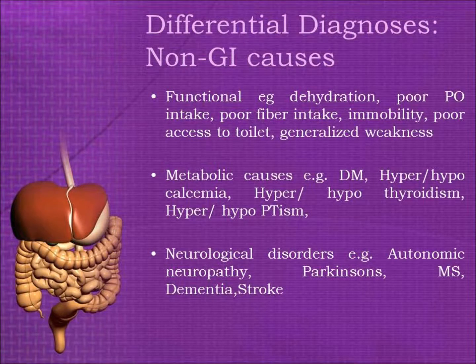Differential diagnoses, non-GI causes. Functional causes include, for example, dehydration, poor peroral intake, poor fiber intake, immobility, poor access to toilet, and generalized weakness.